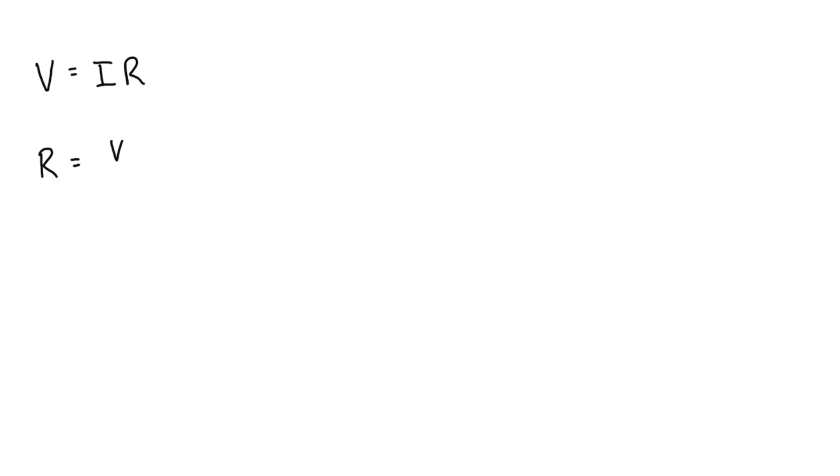R is equal to V over I. So R is resistance and the unit is in ohms, V is voltage, the unit is in volts, and I is current, the unit is in amps. So in other words, when we're talking about the units, we have one ohm is just equal to one volt per amp.